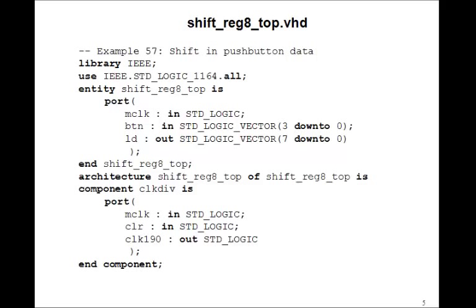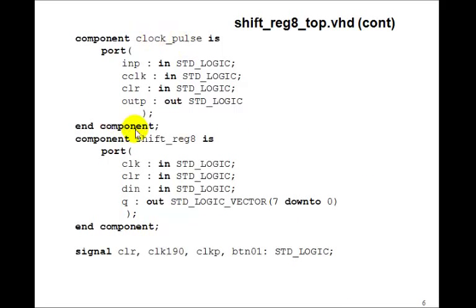Okay, let's just write our top level design. The inputs will be MClock, button 3 down to 0, and the LDs 7 down to 0. Here's our component declaration for clock div, our component declaration for clock pulse, and our component declaration for shift reg 8. We'll have signals clear, clock 180, clock pulse, and button 01.